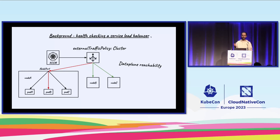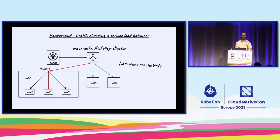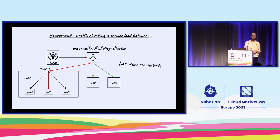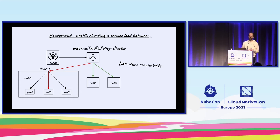Other cloud providers can choose another mode called data plane reachability, where the load balancer tries to reach the pod directly using the node port exposed on the node. Both methods try to ascertain if the load balancer can actually reach the core endpoint — the pod — using two different mechanisms. The proxy state mode assumes that if the service proxy is running fine, it has programmed all the networking rules needed so traffic can be forwarded to the pod.